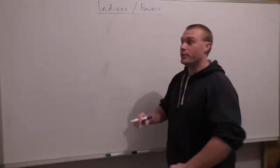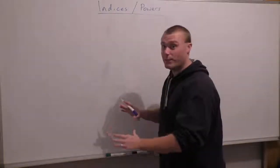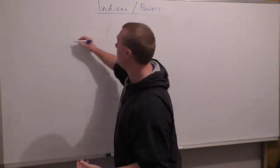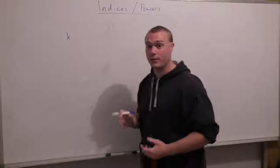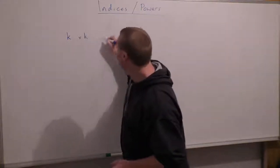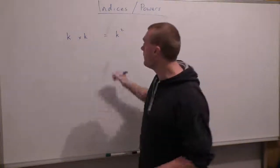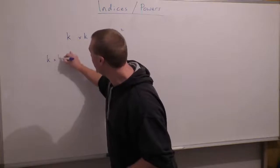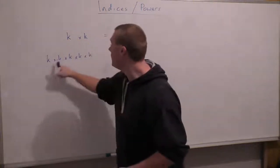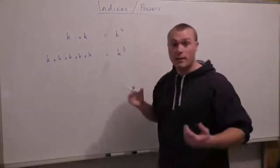Now we're going to look at how to do it with anything — this is where we use algebra. Most people hate algebra, but don't worry. Algebra just represents any number. We can pick any letter; I'm going to pick the letter K because that's one that doesn't get used very often. So K times K is just K squared. K times K times K times K times K times K — six Ks — gives me K to the power of 5. Nice and easy.